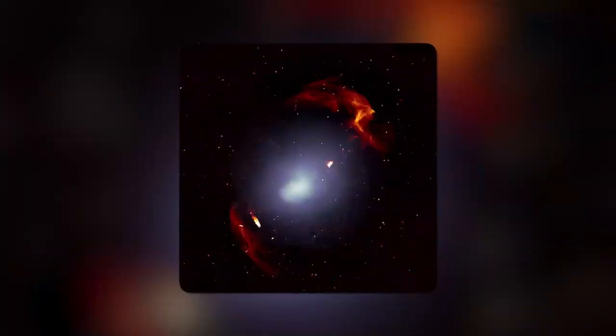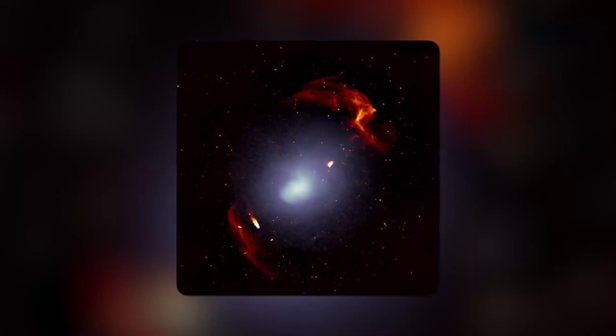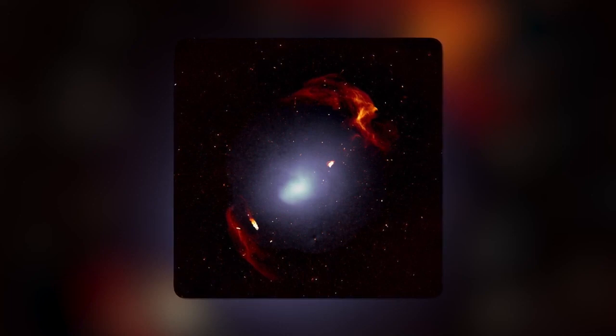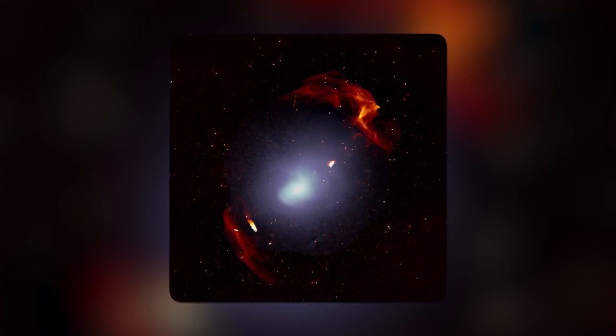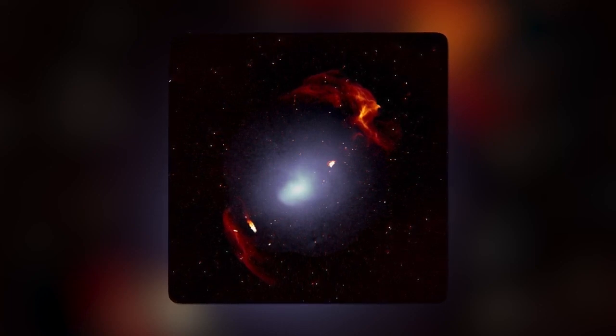If you look closely at this image of Abell 3667, you will observe that the white colour in the centre represents a concentration of 550 individual galaxies, but the red colours on either side are shockwaves created during the formation of this supercluster.